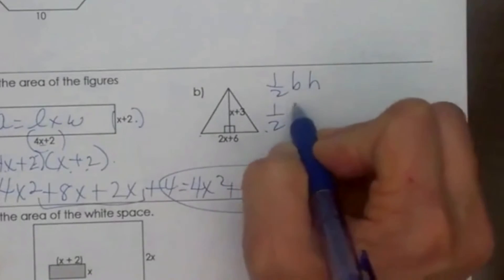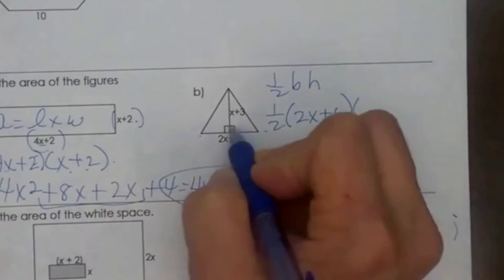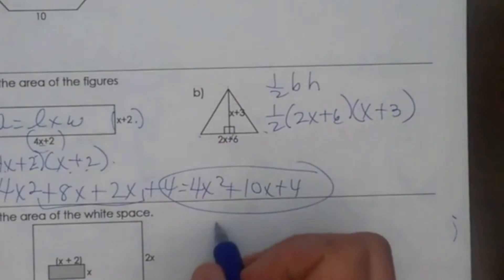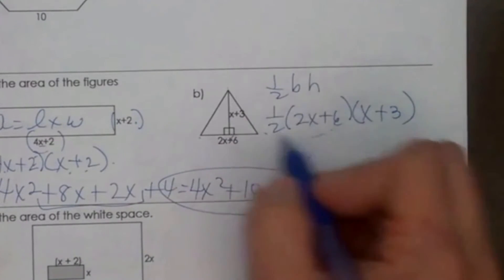We are going to have 1 half. The base here is 2x plus 6 and the height is x plus 3. You can do this one of two ways. Let's go ahead and take half of the first binomial.